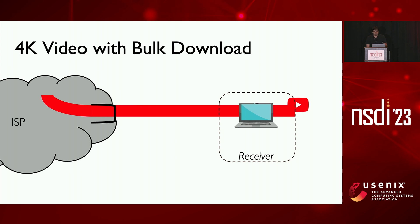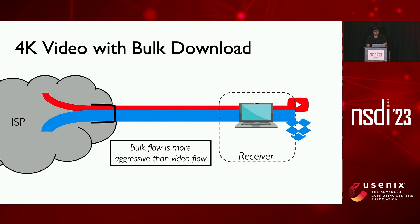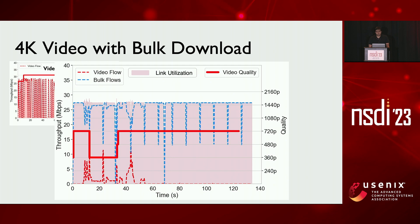Now we add bulk flows to the mix. The backlogged bulk flow is much more aggressive than the video flow and ends up stealing most of the bandwidth from it, which results in poor video quality. As you can see, the bulk flow leaves almost no bandwidth for the video flow. Similar observations have been made in prior research showing how video ABR algorithms do poorly in the presence of bandwidth-hogging flows.